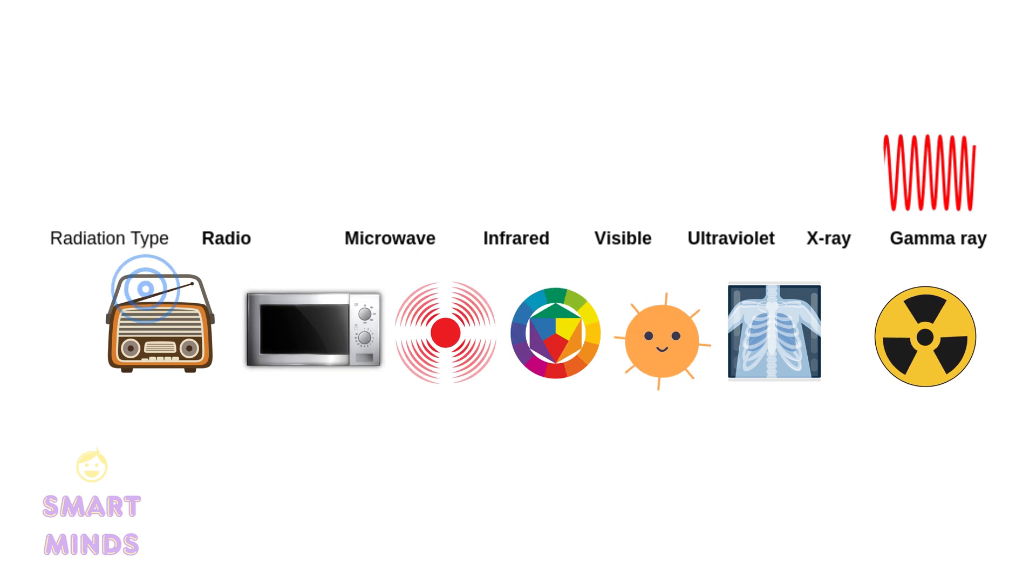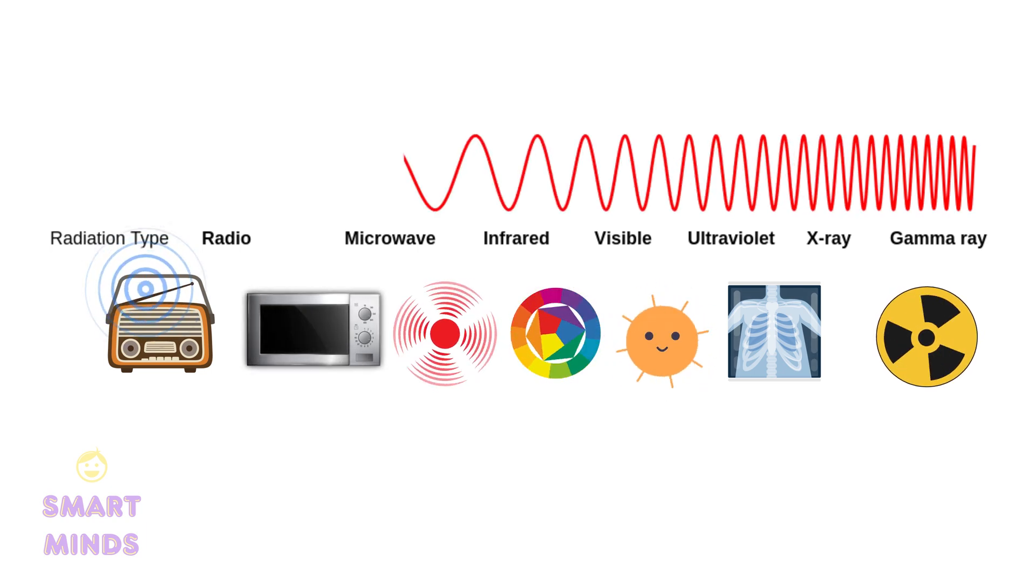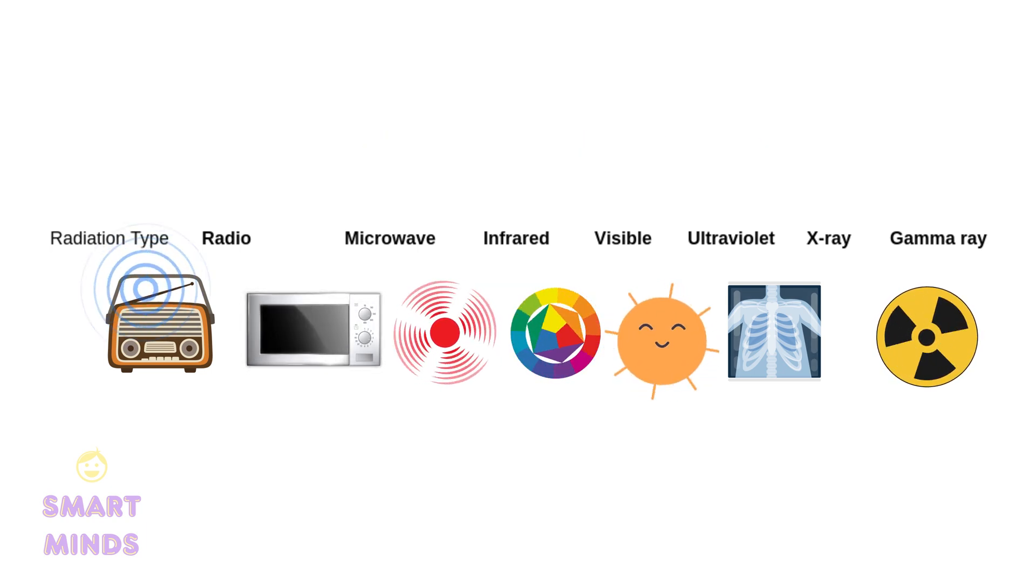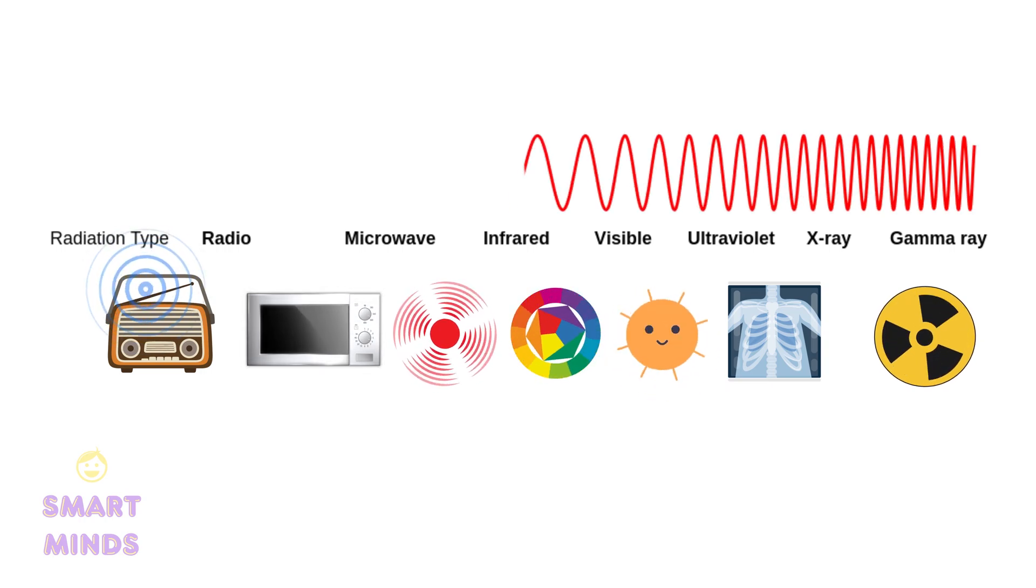These waves make up what we call the electromagnetic spectrum, and understanding it can help us understand how everything from our phones to the stars in the sky work.